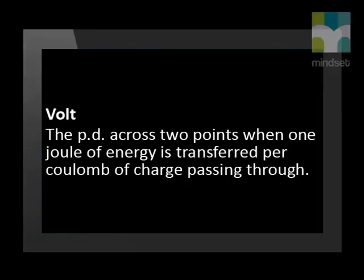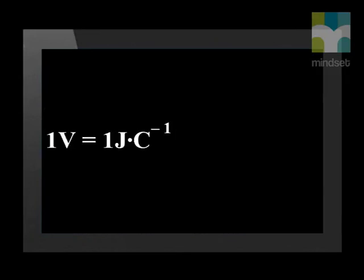This reading means that 4.48 joules of energy is transferred to the light bulb for every coulomb of charge that passes through it. Using SI units, the potential difference across the light bulb is 4.48 volts. We can therefore say that one volt is the potential difference across two points when one joule of energy is transferred per coulomb of charge — one volt equals one joule per coulomb.